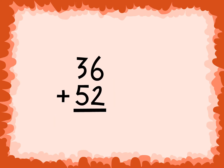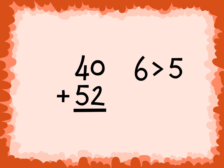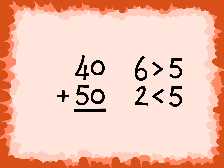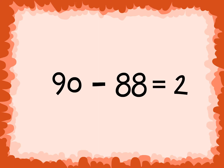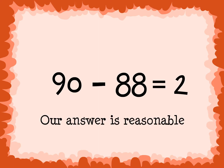Let's try another one: 36 plus 52. Find the closest 10. 36 is closest to 40, because 6 is greater than 5, so we round up. And 52 is closest to 50, because 2 is less than 5, so we round down. The estimate is 90, because 40 plus 50 equals 90. The exact answer is 88, because 36 plus 52 is 88. Our exact answer is 2 less than the estimate, so our answer is reasonable.